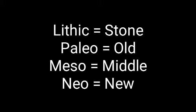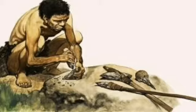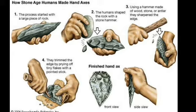Homo habilis and Homo erectus, studied in the previous chapter, belong to the Old Stone Age. Both made tools using the percussion method, which involves beating or striking one large object against another to sharpen it — for example, striking a bigger stone against a smaller one to sharpen that smaller stone. These Old Stone Age tools were very raw.